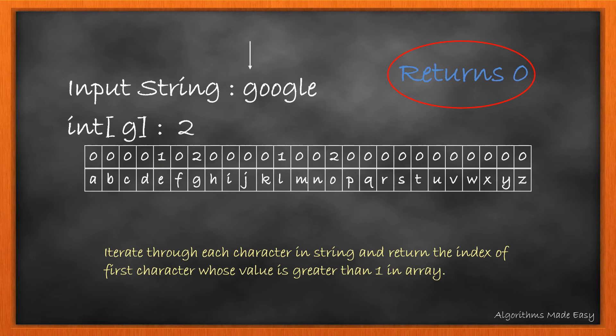Now we iterate over the string again and return the index of the character whose count is greater than 1. Here, we see G has a count of 2, so we break the loop and return 0.